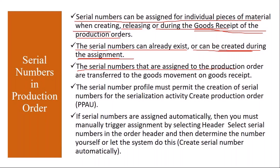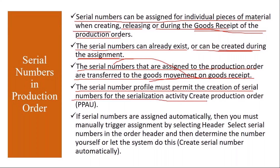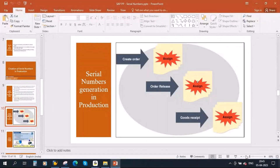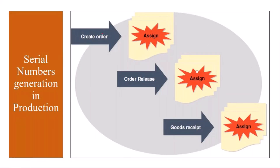The serial numbers assigned to the production order are transferred to the goods movement on goods receipt. If you assign serial numbers during creation or release, those serial numbers will automatically get transferred during goods receipt. The serial number profile must permit the creation of serial numbers for the serialization activity. To create serial numbers, you need to assign the serial number profile to the material in the material master.